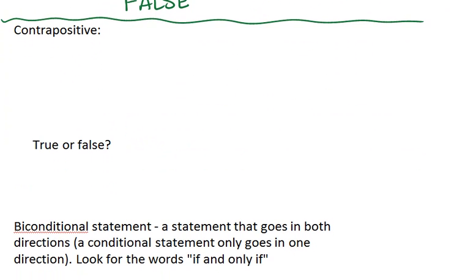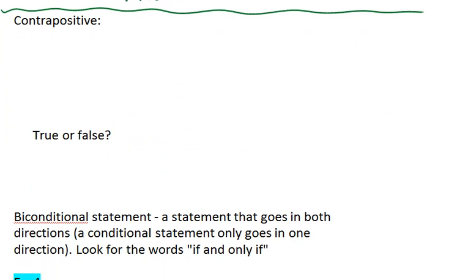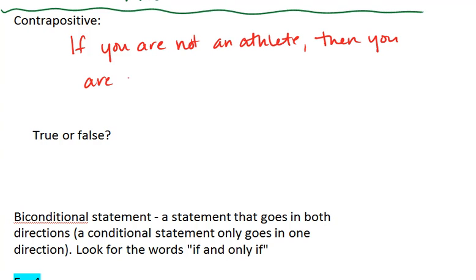Lastly, let's look at the contrapositive. Remember, the contrapositive is a mix of the converse and the inverse. It flips the roles of hypothesis and conclusion and negates them both. Which means we have, if you are not an athlete, then you are not a swimmer.